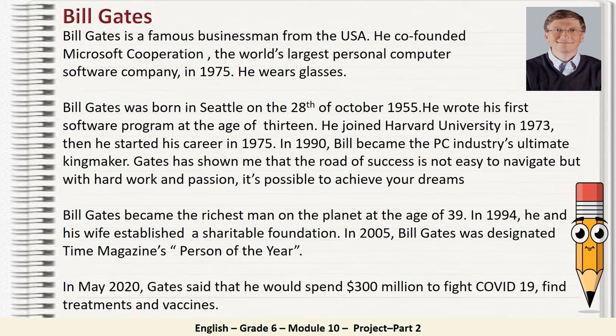Bill Gates became the richest man on the planet at the age of 39. In 1994, he and his wife established a charitable foundation. In 2005, Bill Gates was designated Time Magazine's Person of the Year. In May 2020, Gates said that he would spend $300 million to fight COVID-19, find treatments and vaccines. Nice work, everyone!